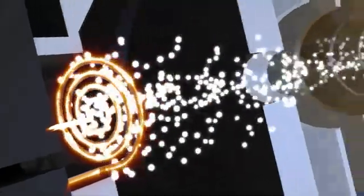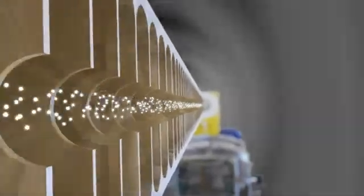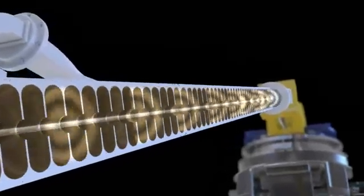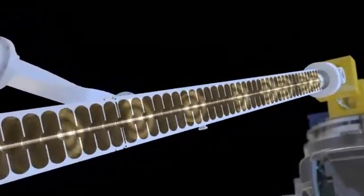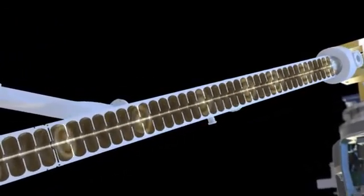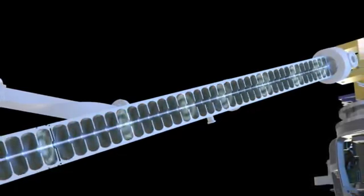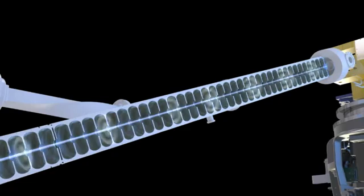The electrons are accelerated along the waveguide toward the target. The waveguide contains a series of copper cells. Small holes, or irises, between these copper cells allow the electrons to travel along the waveguide and help to focus the beam. A vacuum is created to ensure that the electron beam is not impeded by other particles.